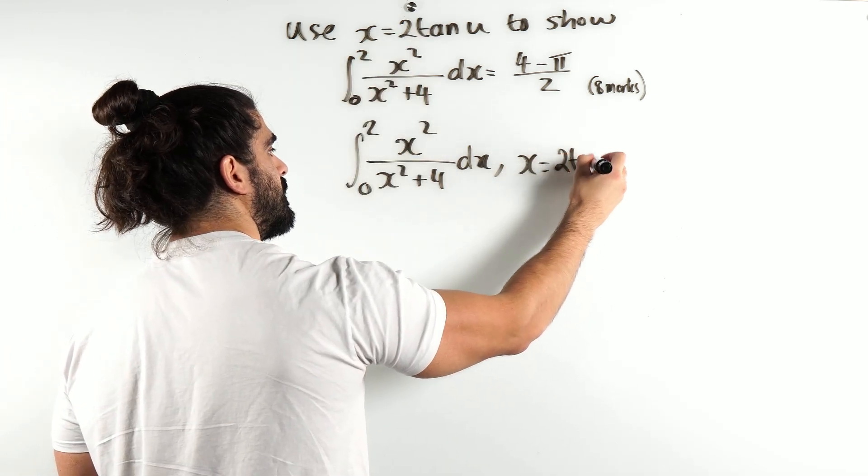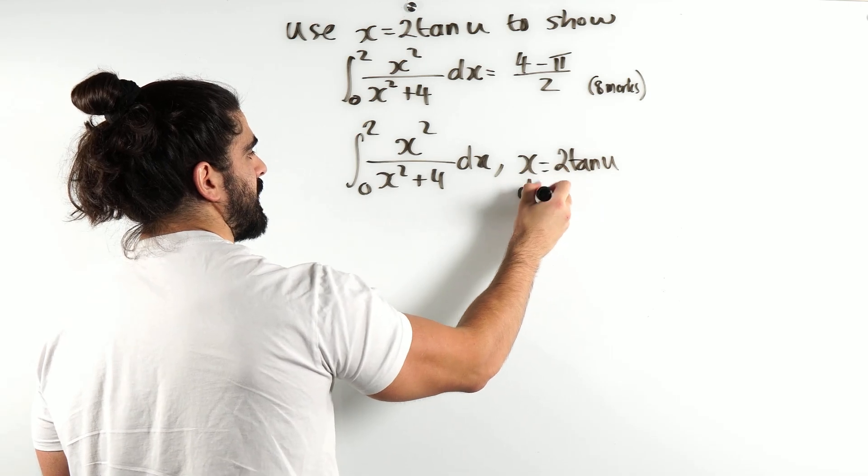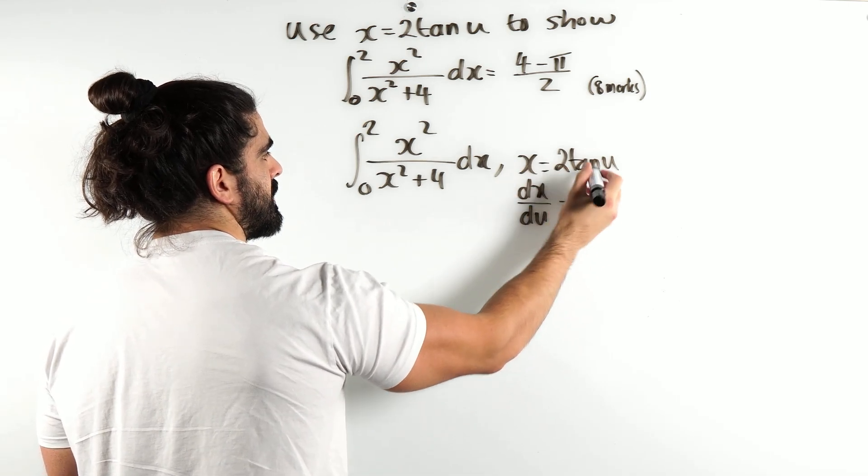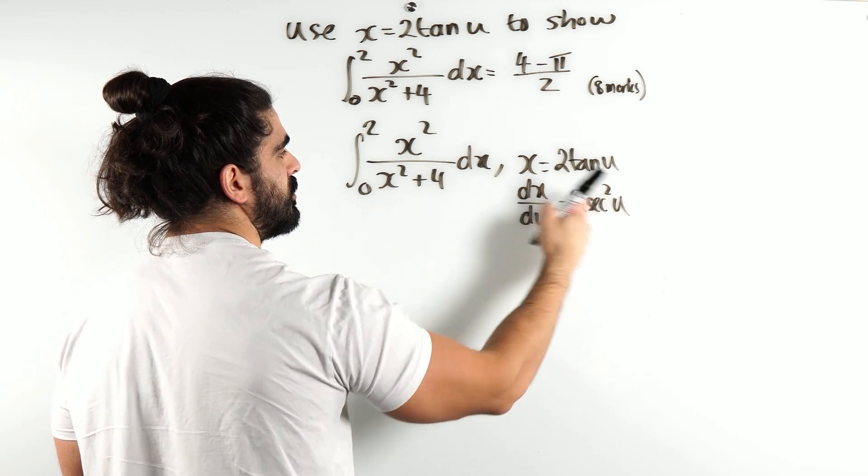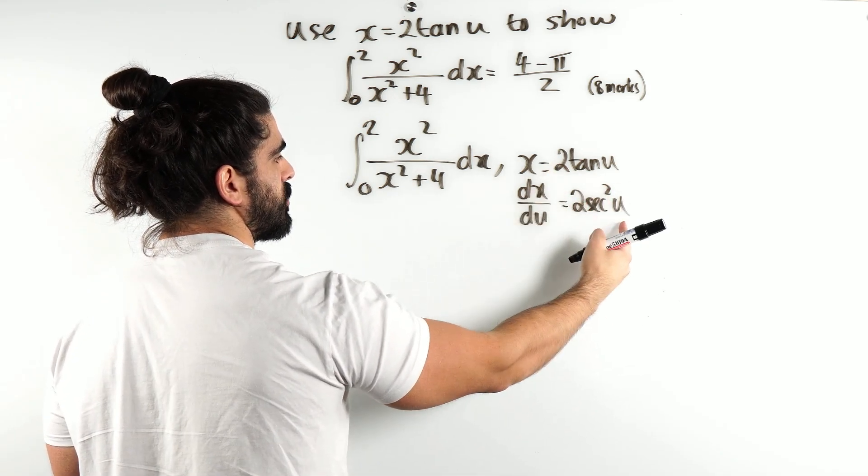Because we're doing this u substitution. So we have x = 2tan(u). So dx/du, tan differentiates to sec²(u). So we're going to divide by du, we get dx = 2sec²(u)du.